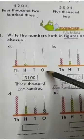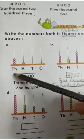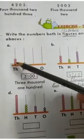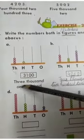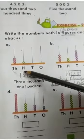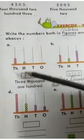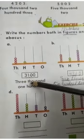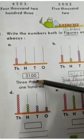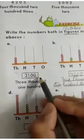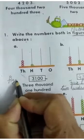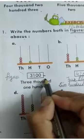Now here an abacus is shown. In 1000 how many beads are there? 1, 2, 3 — so you will write 3. In 100 how many beads are there? 1 — so you will write 1. There is no bead in 10s and 1s, so you will write 0. This is the figure form.